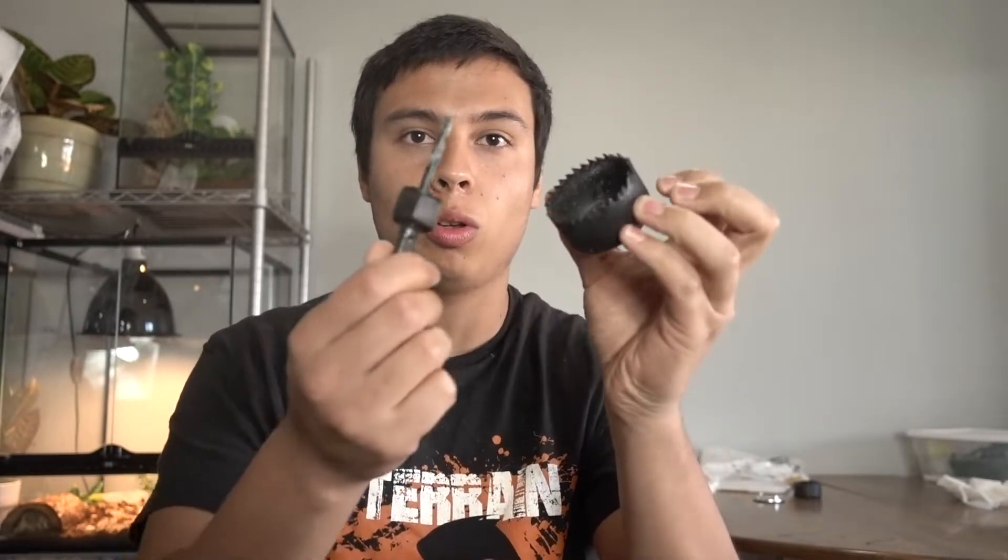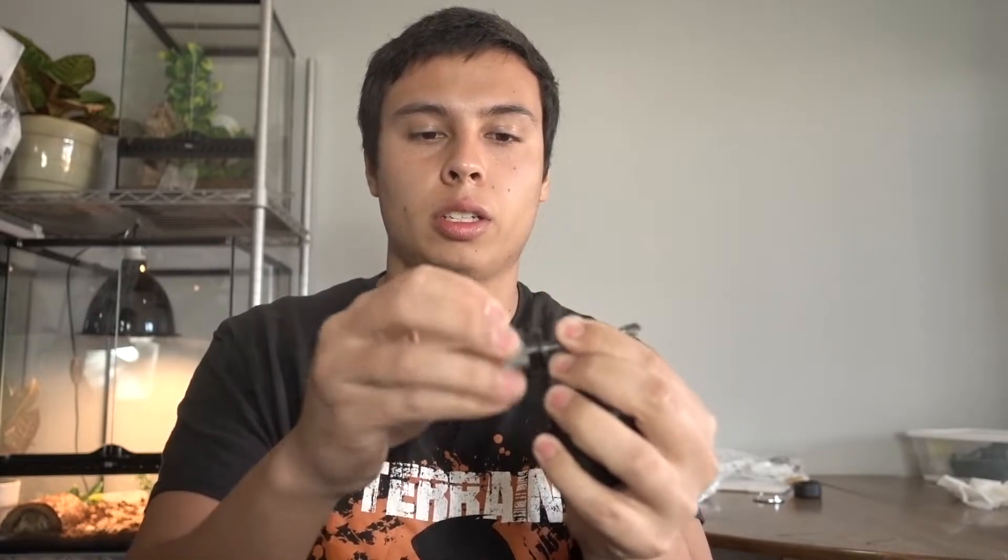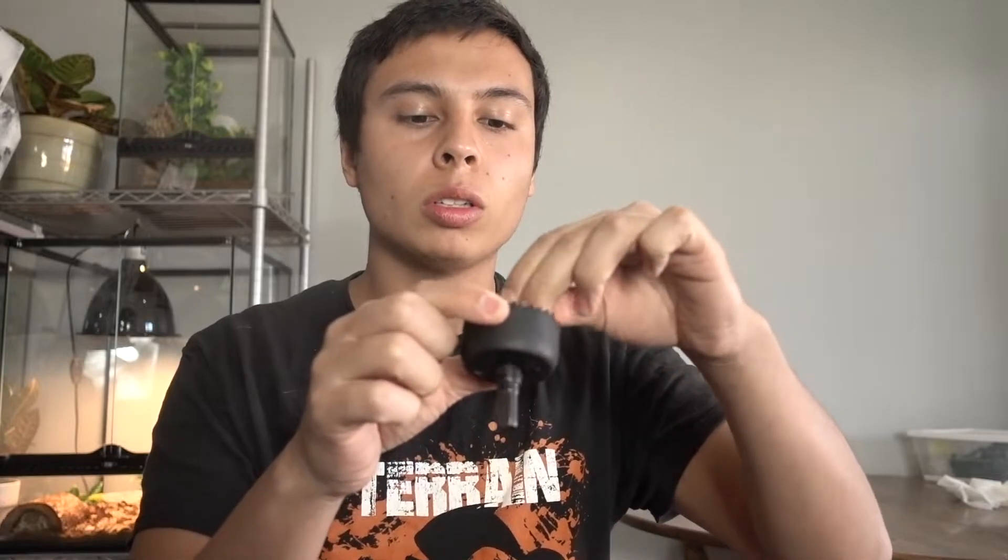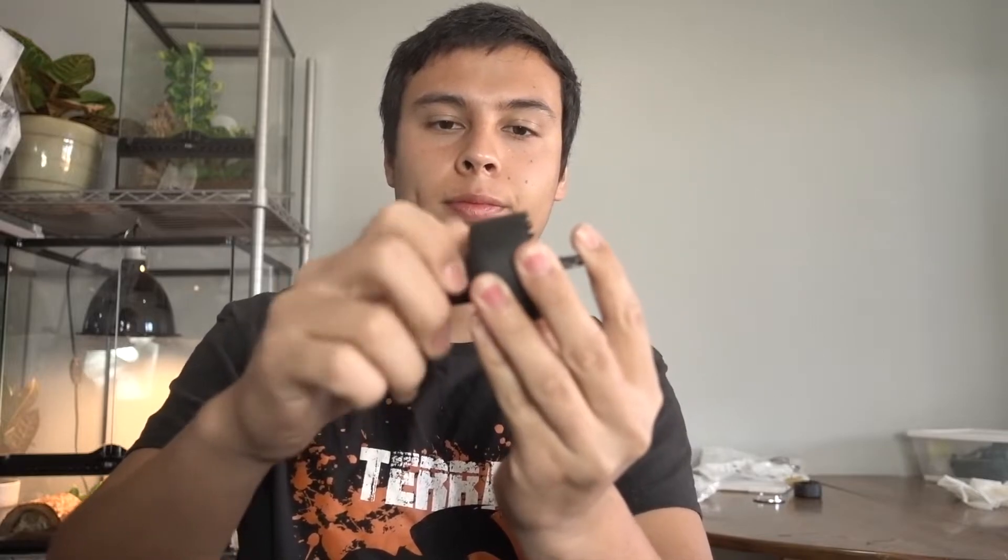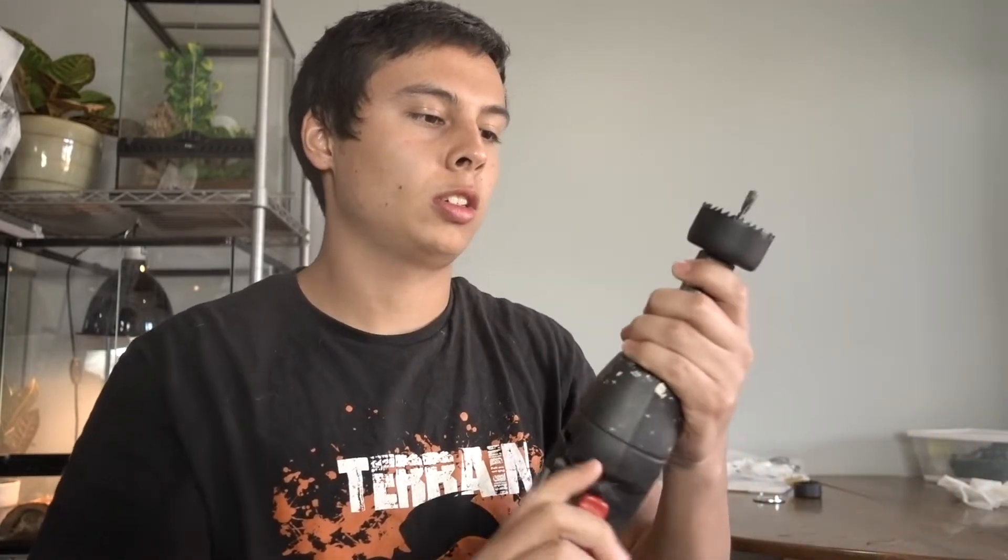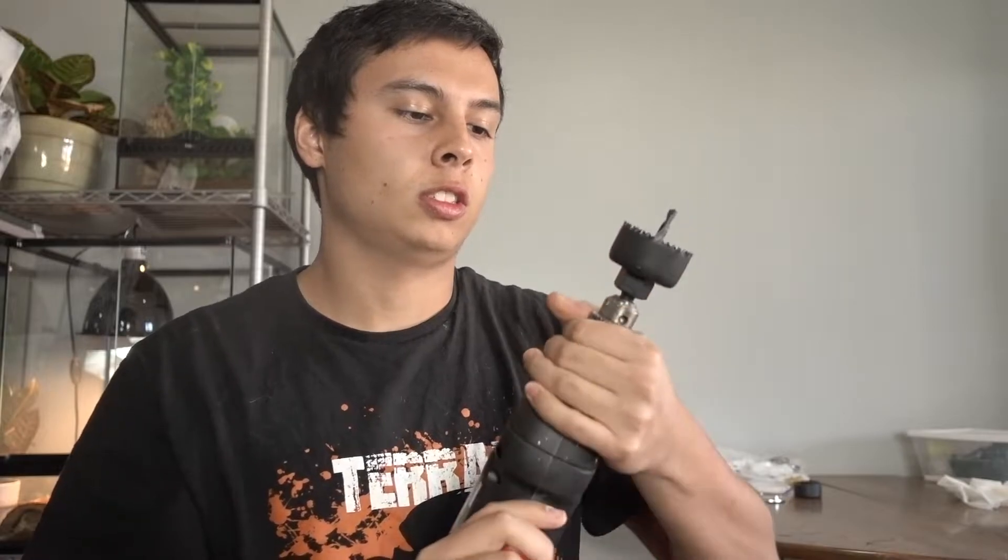Alright, so the first step is to get your hole saw ready. So with mine I unscrew this, drop the drill bit into the hole and then tighten it up. And this is how you're going to be drilling your tubs and then just put it in your drill. So, I like corded drills, they work really good and batteries don't die.